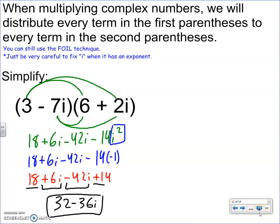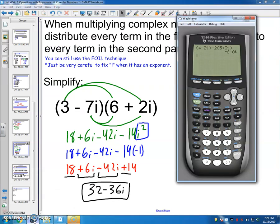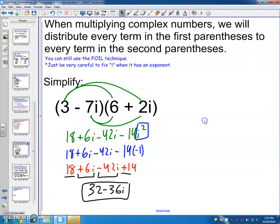Again, the calculator can do this for you. So let's see it in action. Parentheses, 3 minus 7, second period. Other parentheses, 6 plus 2, second period. And we get 32 minus 36I.